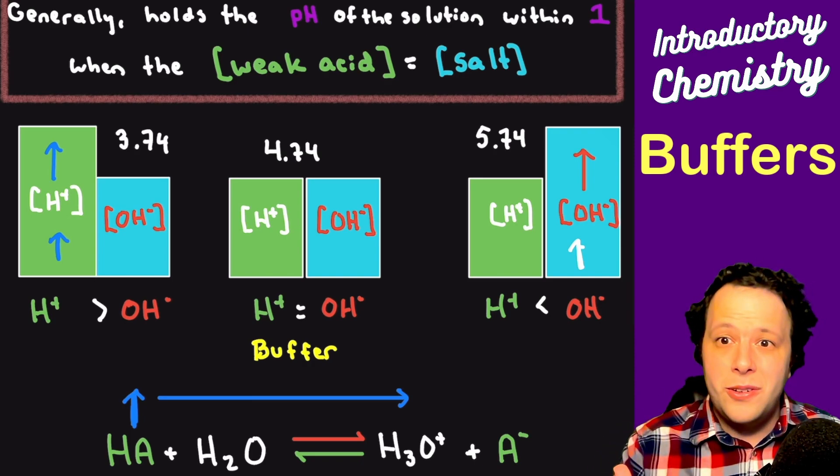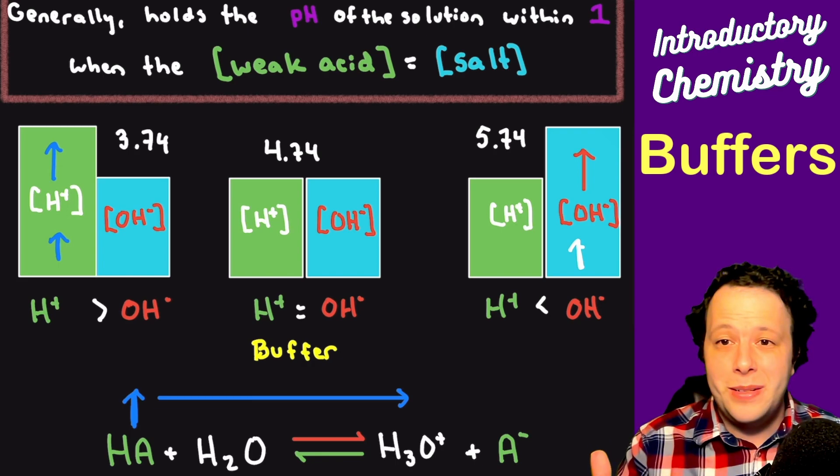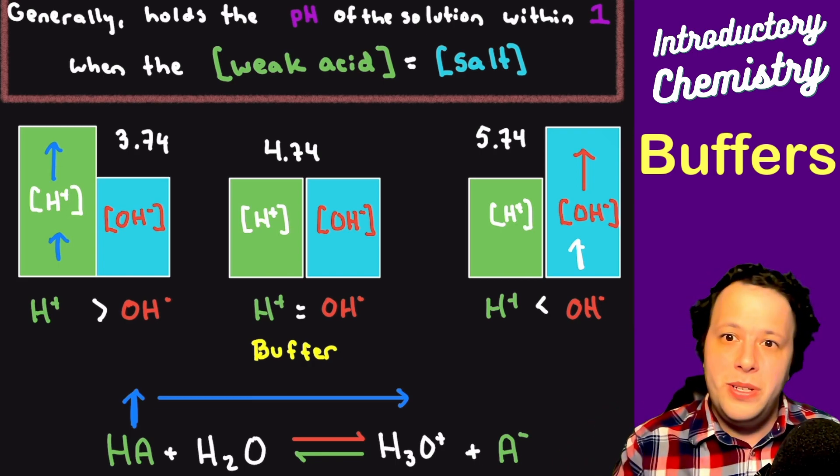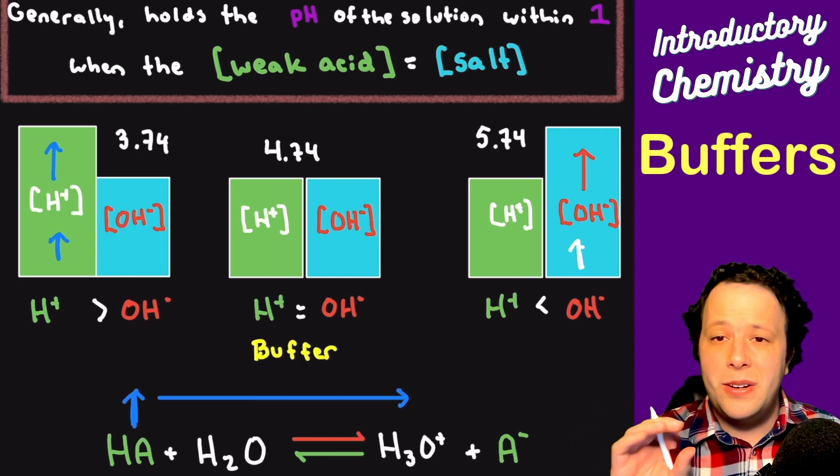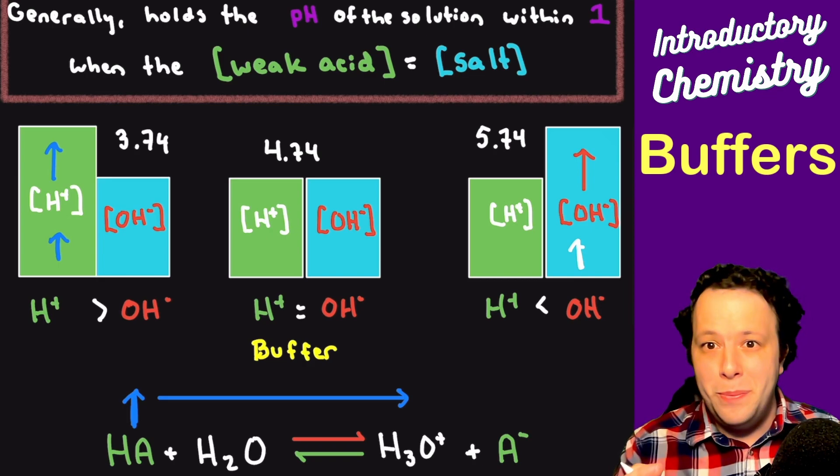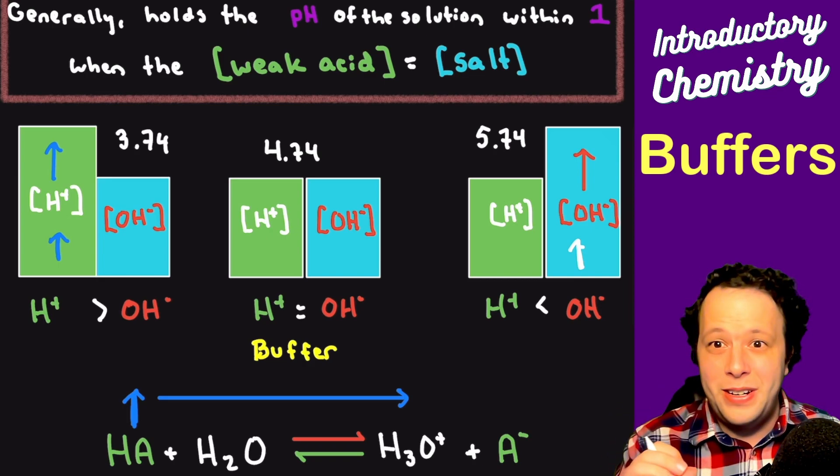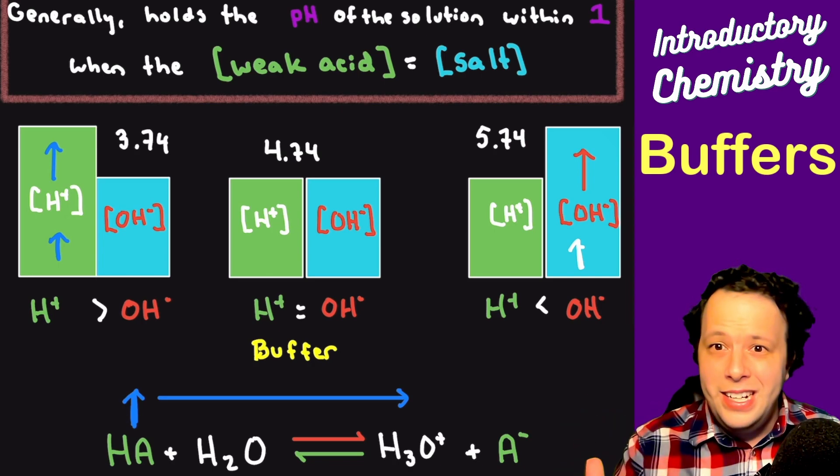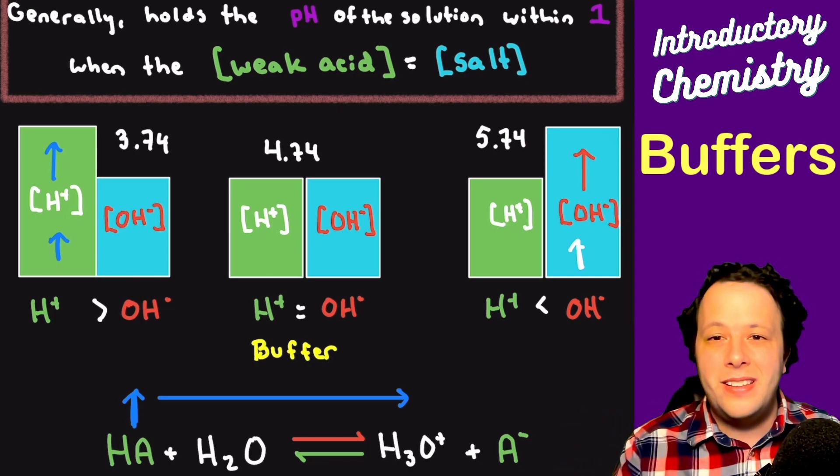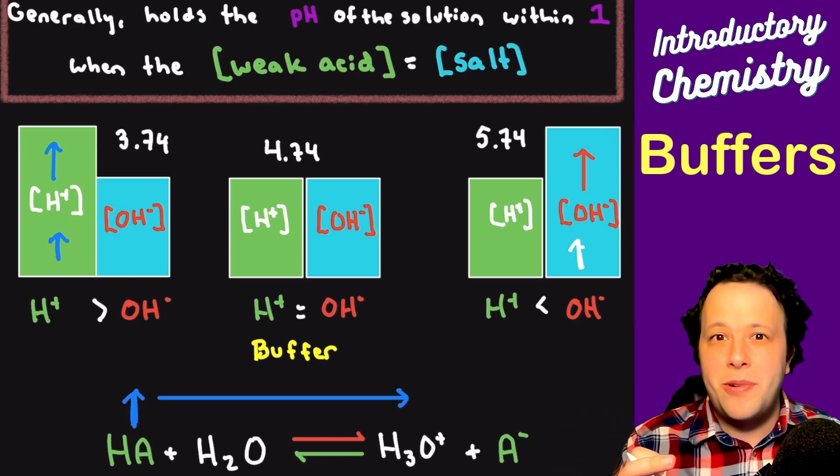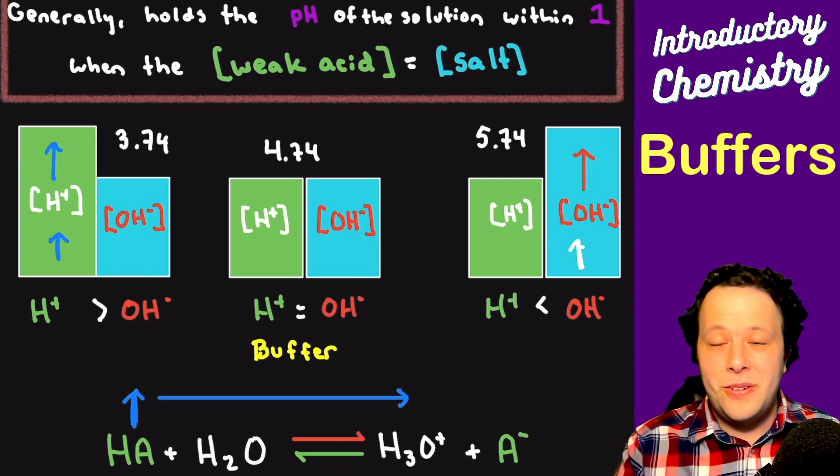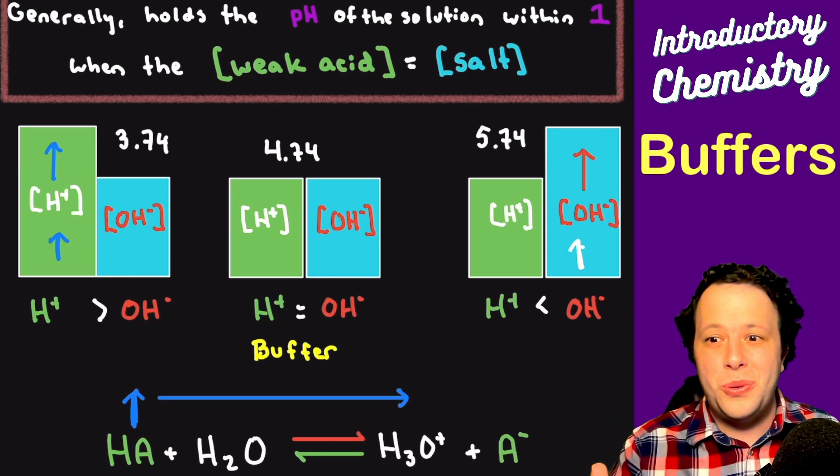This is very critically important for biological systems, which have enzymes and proteins that are very sensitive to the pH. Without them being in their very specific ranges, they will denature. They will cease to function correctly. They won't be able to react properly.